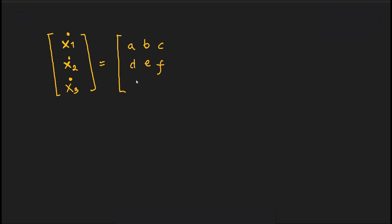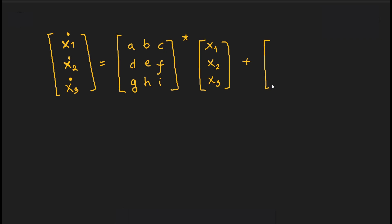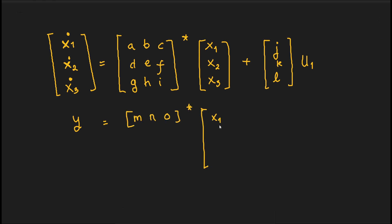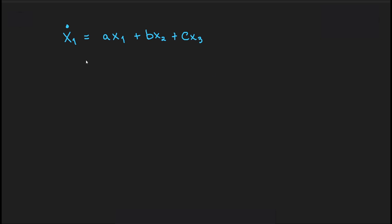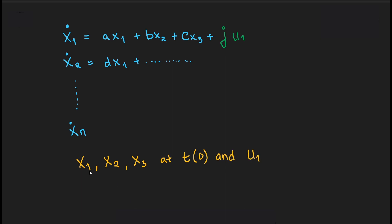As an example, let's use a system with three state variables x1, x2, x3, and input variable u1, assuming all variables in the matrices are real numbers. There are three simultaneous first-order equations: x1-dot equals a times x1 plus b times x2 plus c times x3 plus j times u1, and so on. These differential equations can be solved for all t after t0 if we know the value of u1 and the values of x1, x2, x3 at time t0. By solving the differential equations, we can find x1(t), x2(t), and x3(t) for all t greater than t0, and find y(t) by simple calculations.